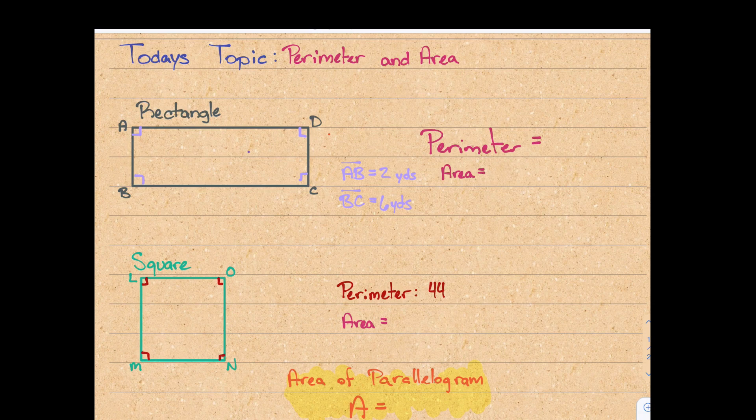The perimeter of a figure is the walking distance around it. It's how much fence you would, how long a fence you would need if you were to build a fence around a plot of land. To find the walking distance or the perimeter, all you need to do is add up all the side lengths.